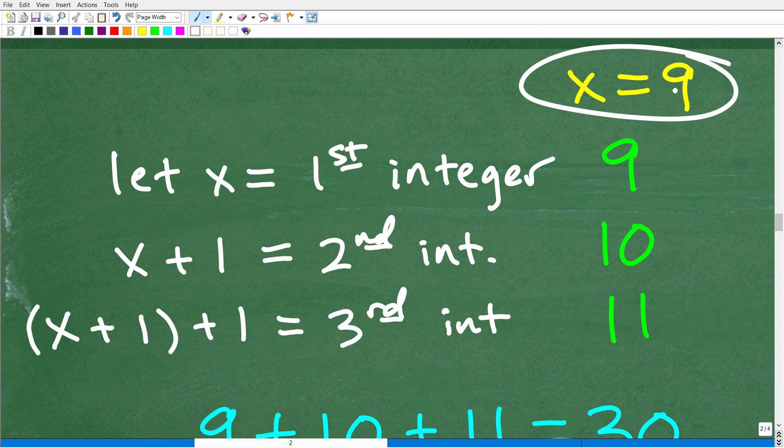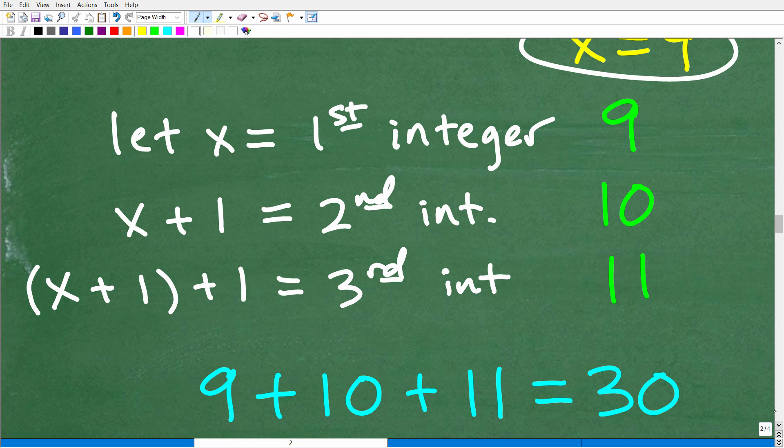Okay, so X is equal to 9, right? We just figured that out. So we got to go back to our variable setup. So we let X equal to the first integer. So X is equal to 9. So our first integer is 9. X plus 1, or 9 plus 1, is our second integer, our second consecutive integer. And then X plus 1 plus 1, or X plus 2, is our third integer. So that's going to be 9 plus 1 plus 1, which of course is 11.